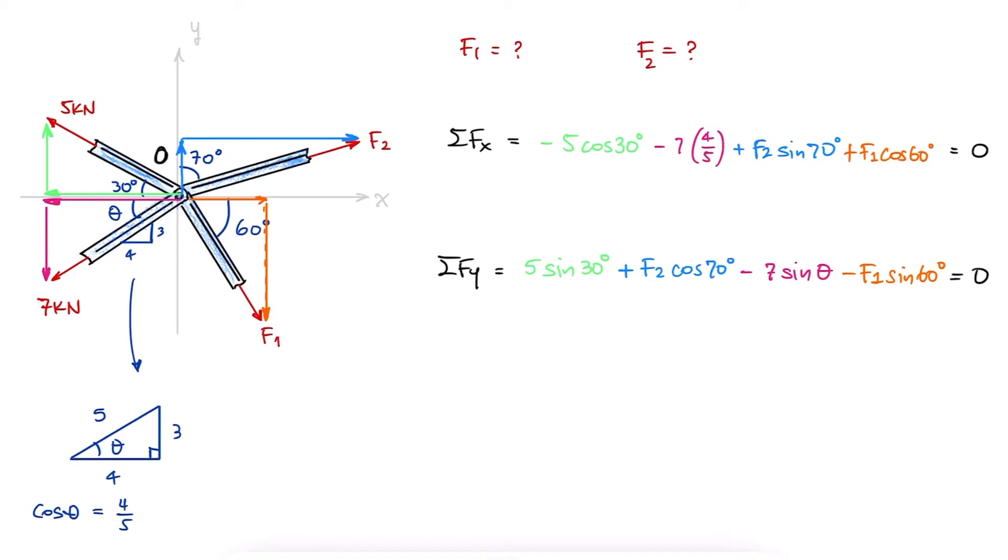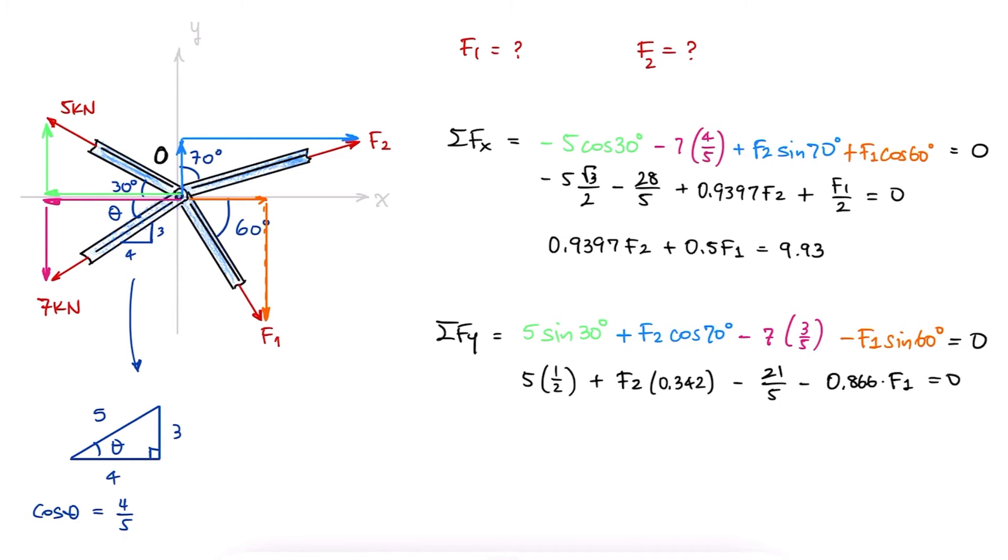The sum of forces is equal to zero because we're trying to find F1 and F2 for equilibrium. Evaluating the numbers and simplifying the equations, we find two equations with two unknowns.